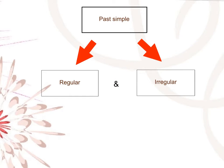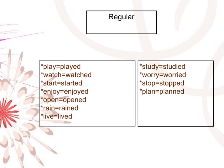Past simple — regular and irregular verbs. Regular verbs: play, played. Watch, watched. Start, started. Enjoy, enjoyed. Open, opened. Reign, reigned.